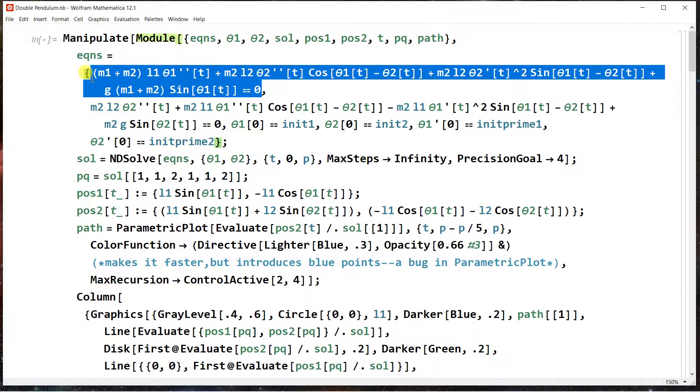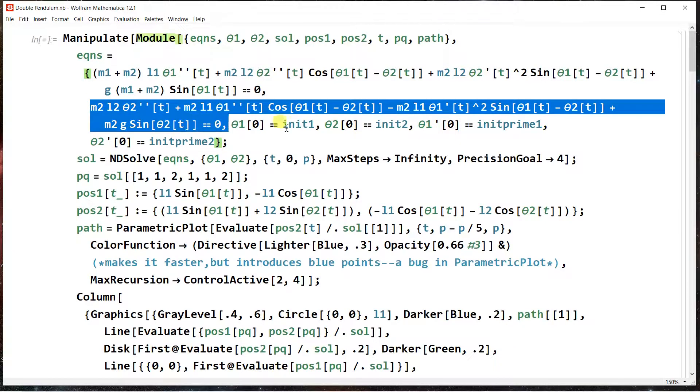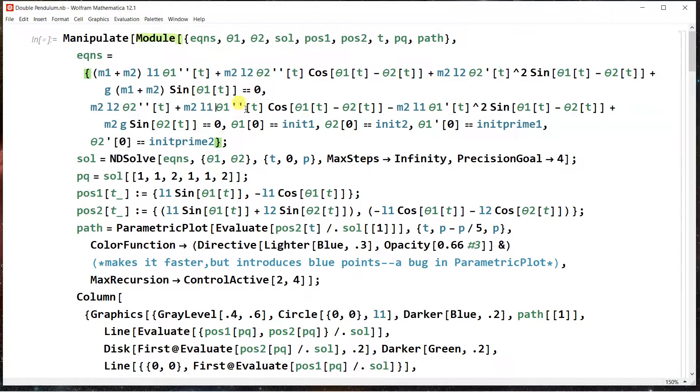So that's one of the equations. And then we have our second equation down here. And I won't read through that for you. They're in reverse order in the way I solved them. The top one is for theta 2 and the bottom one is for theta 1. And we have some initial conditions here.